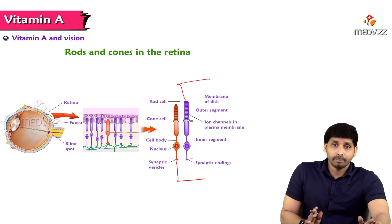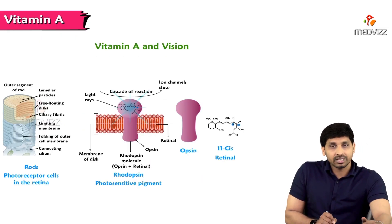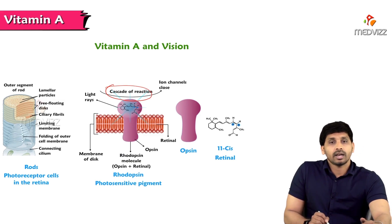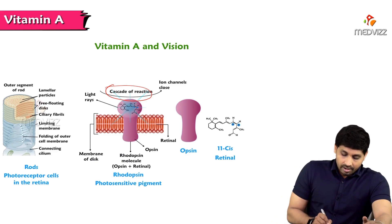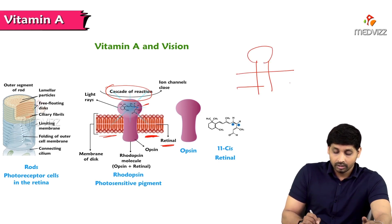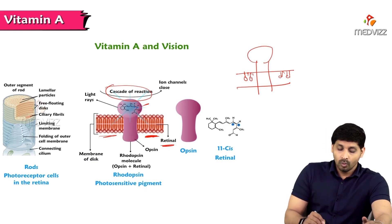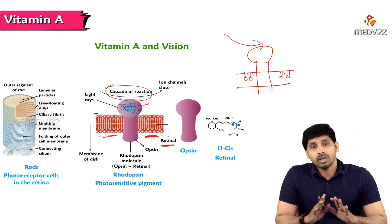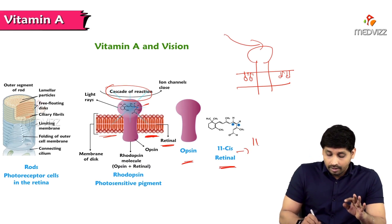In rod cells, rhodopsin has two parts: opsin (the protein part) and retinal (the non-protein part, in the 11-cis form). When light falls on rhodopsin, there is a cascade of reactions — ion channels close, generating a nerve impulse. You can see here where retinal is embedded in opsin, forming rhodopsin.